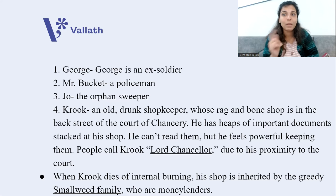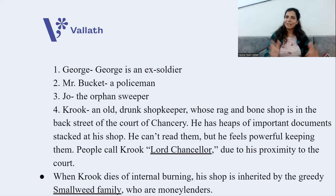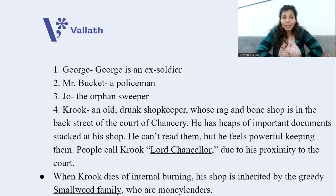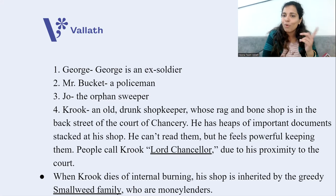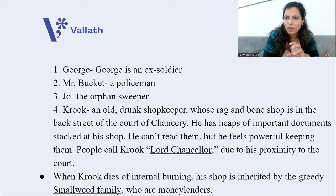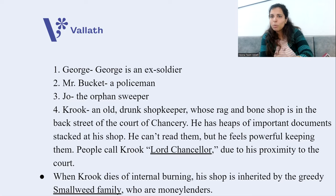Krook is nicknamed 'Lord Chancellor' because of his proximity to the court and the many important documents kept at his store. Krook is a gin addict who drinks so much that in the novel he dies of spontaneous combustion — his body gets so hot he burns from within. His shop is then inherited by the greedy Smallweed family, because Mrs. Smallweed is Krook's sister. The Smallweeds are money lenders; George had borrowed money from them.